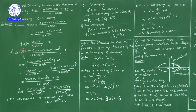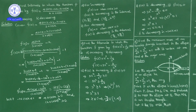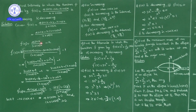Now f'(x): the derivative of −x is −1. For the term 4sinx/(2 + cosx), taking 4 outside, we apply the quotient rule u/v → (v·u' − u·v')/v². Here u = sinx, v = 2 + cosx, so the numerator is (2 + cosx)·cosx − sinx·(−sinx), denominator is (2 + cosx)².